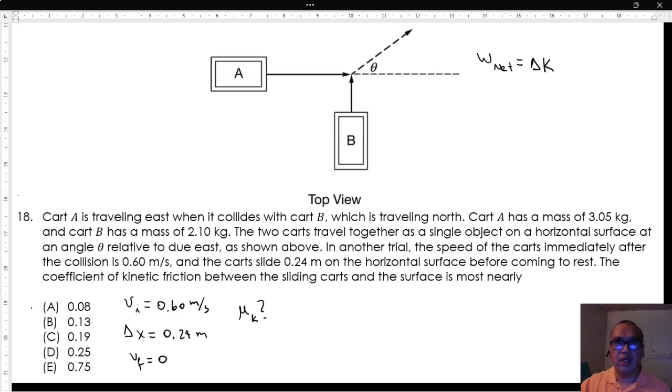The resultant work is equal to 0, the final kinetic energy, minus one half mass initial speed squared. This resultant work is done by friction alone. So we have force of friction times displacement times the cosine of 180 degrees is equal to negative one half mass times initial speed squared.